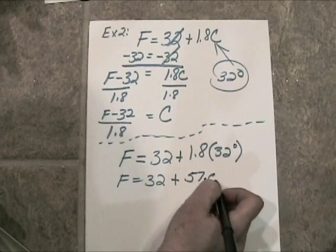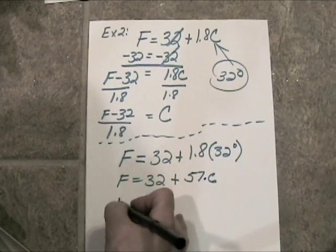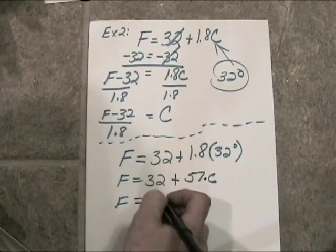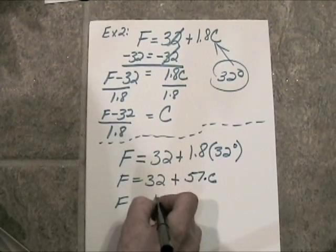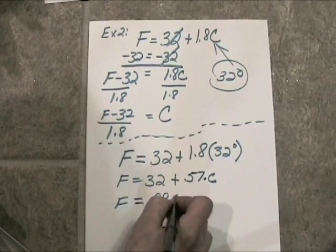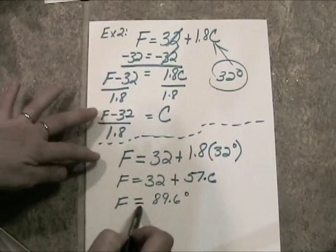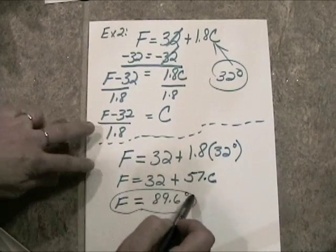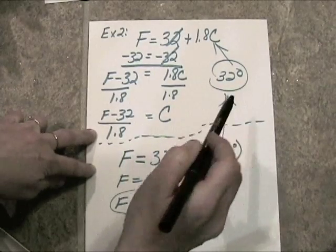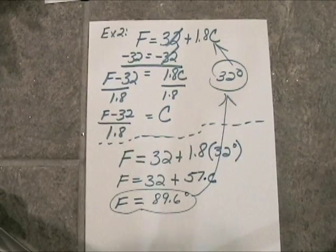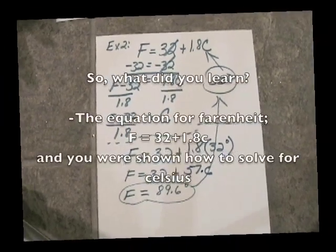57.6. Well, by George, by Jingo, if we go ahead and add that to 32, we're going to get 89.6 degrees Fahrenheit. So, this is the equivalent of 32 degrees in poor Beatrice's mind. No wonder she thought it was hot. Thank you, dear.